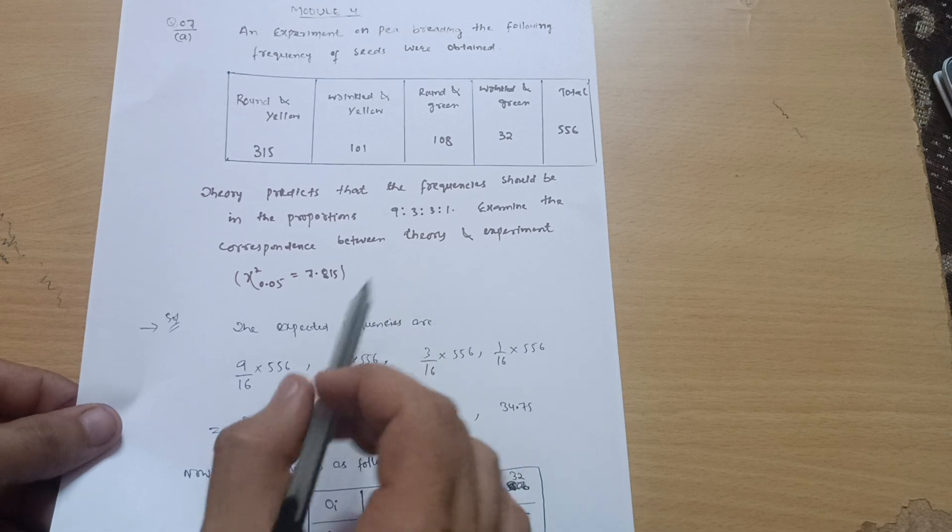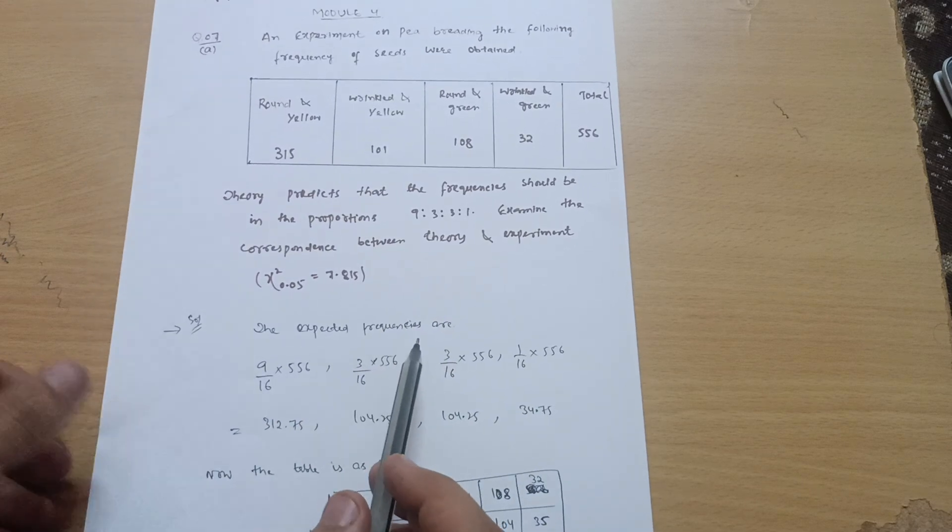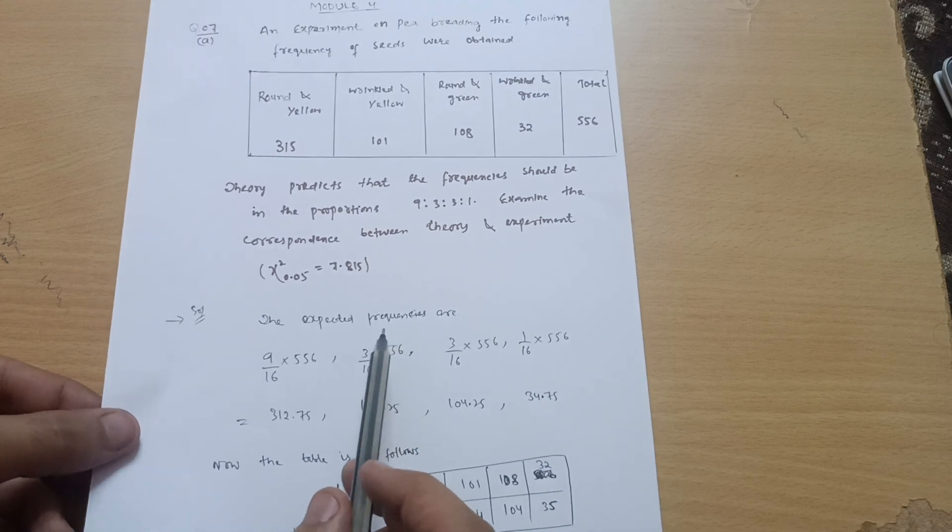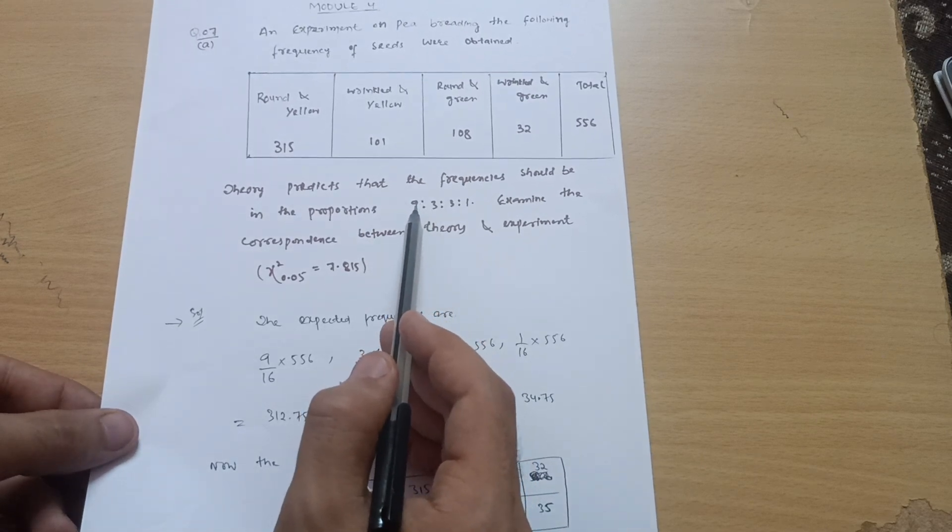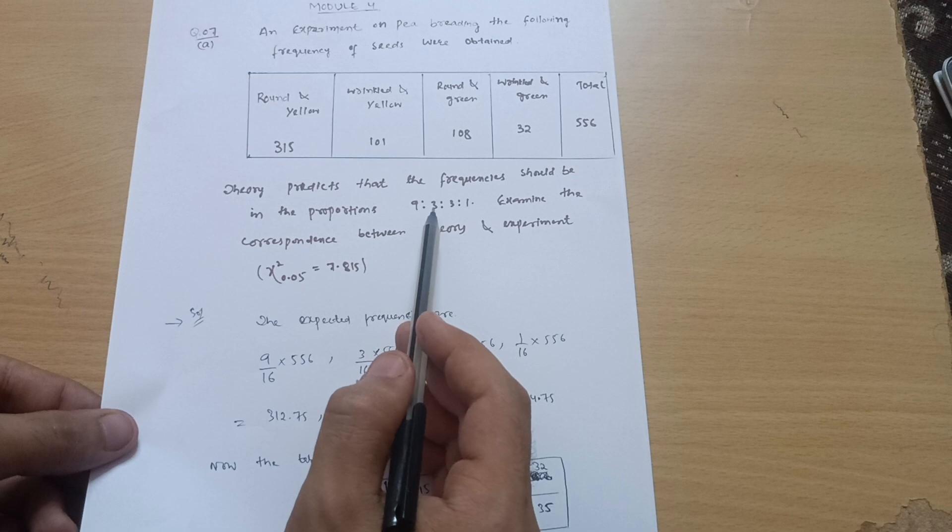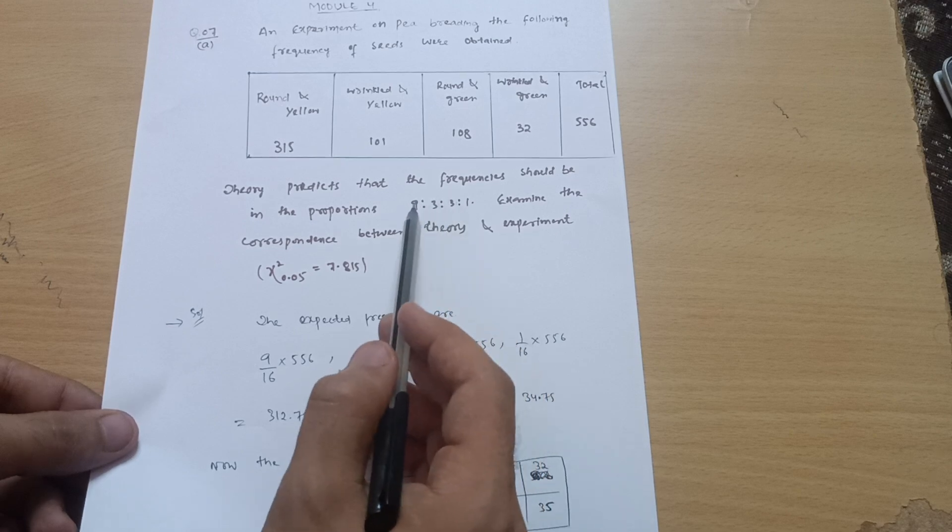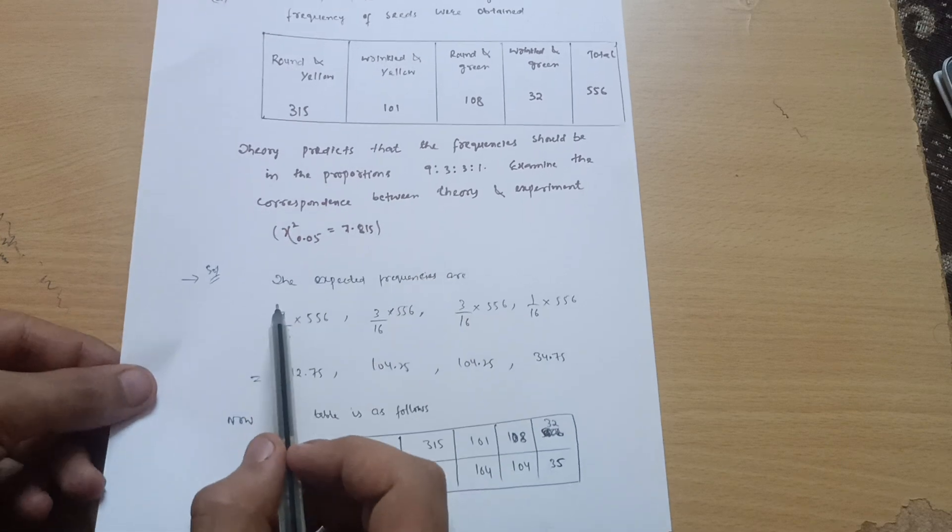So I can write down the expected frequencies which we usually calculate in the chi-square distribution. See here, 9 plus 3 is 12, plus 3 is 15, plus 1 is 16. So you have to take first this proportion 9:16, so 9 divided by 16 multiplied by this total value, 556.